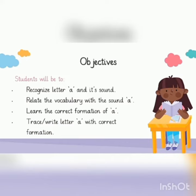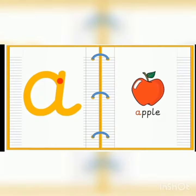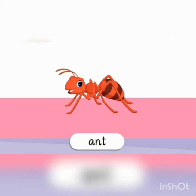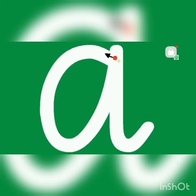Write letter A, correct formation A. A for apple. A. Apple. Ambulance. What is the beginning sound of ambulance? A. A for ant. A. What is the beginning sound of ant? A.